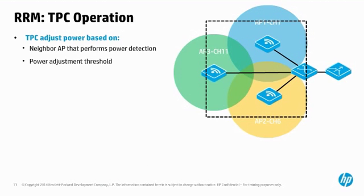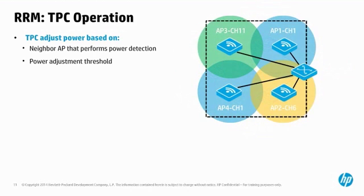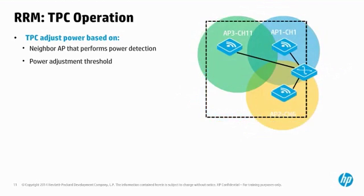TPC adjusts the transmit power of an AP based on two factors: neighbor APs that perform power detection, and the power adjustment threshold. In the figure, the target coverage area is currently serviced by three APs. DFS has adjusted the APs to different channels and TPC has adjusted power to maximize coverage. When performance suffered due to user density, another AP was added — DFS adjusts channels to minimize interference and TPC reduces power in response. During later construction, a cable was cut to AP4, taking it down, and TPC responded by increasing power on all APs to fill the gap.